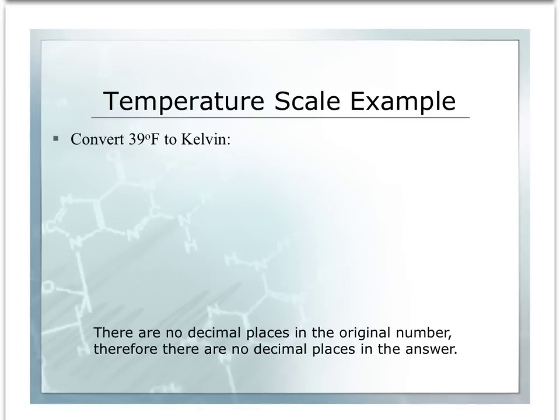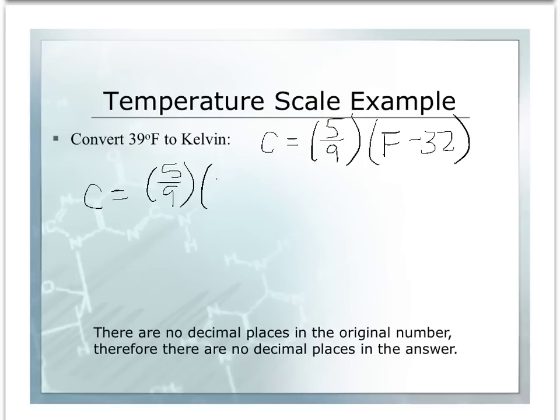Let's do an example of converting. Here we have a Fahrenheit temperature of 39 degrees, and we want to convert to Kelvin. We do not have an equation that goes directly from Fahrenheit to Kelvin, so this is going to be a two-part problem. First, we look at our equation sheet and find that our equation for converting to Celsius is 5/9 times the temperature in Fahrenheit minus 32. Remember where your parentheses are.